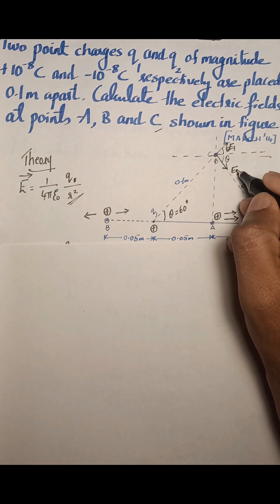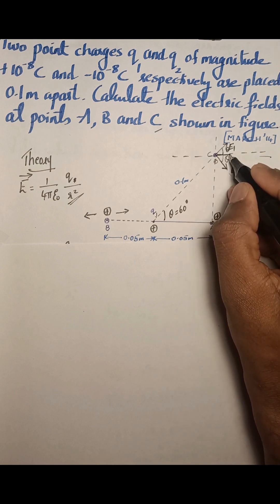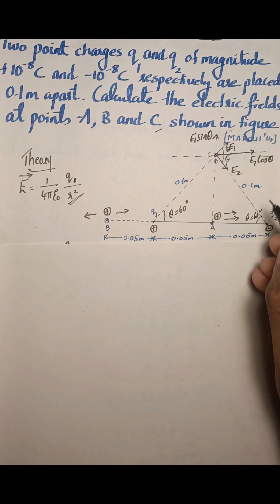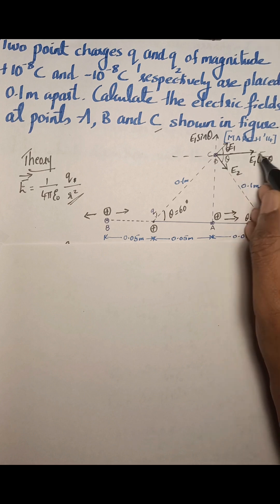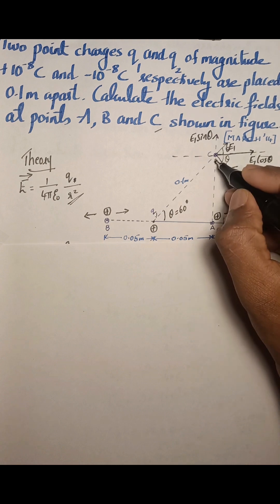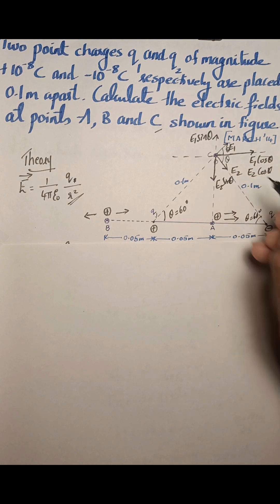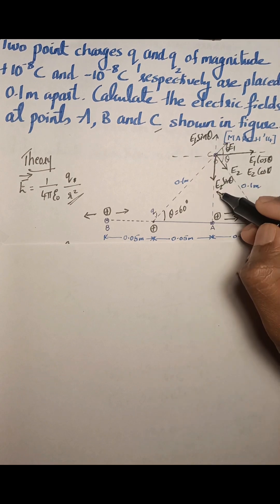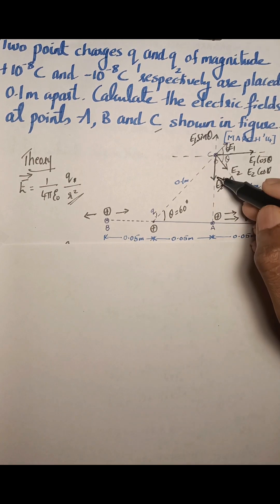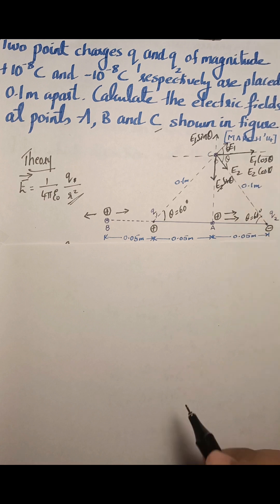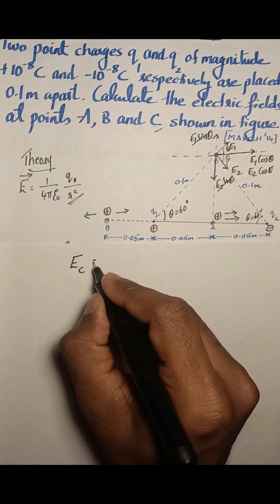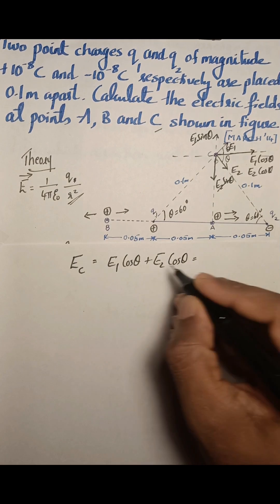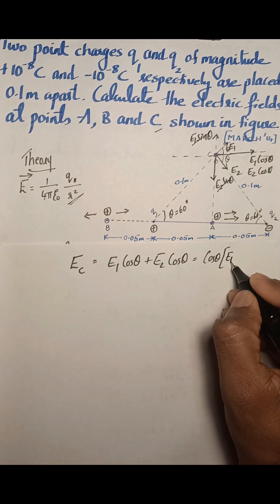We resolve E1 and E2 into components. The horizontal component of E1 is E1 cosθ and the vertical component is E1 sinθ. Similarly, E2 cosθ is horizontal and E2 sinθ is vertical. Since the charges are equal and the distances from each charge to point C are equal, E1 = E2. Therefore E1 sinθ and E2 sinθ are equal and opposite, so they cancel. E1 cosθ and E2 cosθ are in the same direction and add up. The net electric field at C is E1 cosθ + E2 cosθ = cosθ × (E1 + E2).